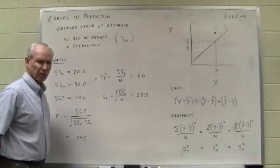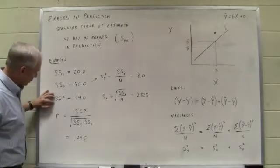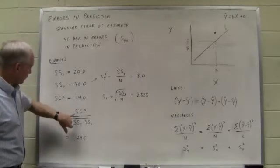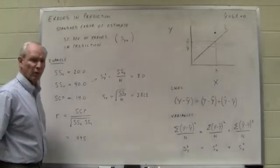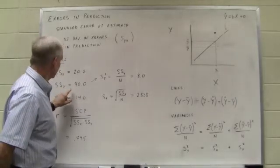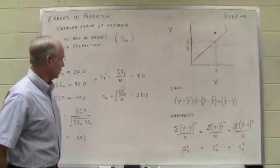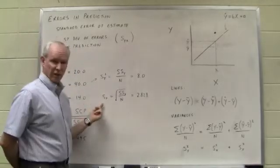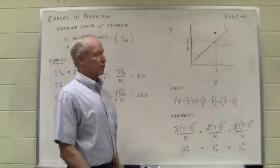Stemming from a small sample, we computed a correlation coefficient by getting first the sum of squares of x, the sum of squares of y, the sum of cross products, and then substituting those three values into the formula for the correlation coefficient. When we put 14 in the numerator and then 20 times 40 in the denominator and took the square root, we came up with a modest correlation of 0.495. We are going to make use of primarily the sum of squares y. We're going to turn that sum of squares into a variance simply by dividing by n, so the variance of all the y scores is 8.0 — 40 divided by 5. We're also going to turn that into a standard deviation by taking the square root, so the standard deviation of the y values is going to be the square root of 8, or 2.828.